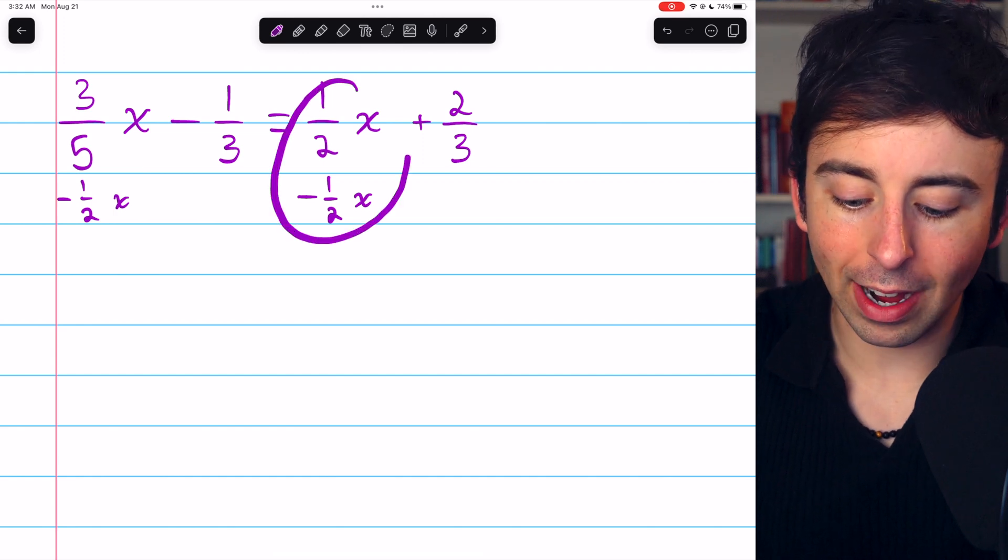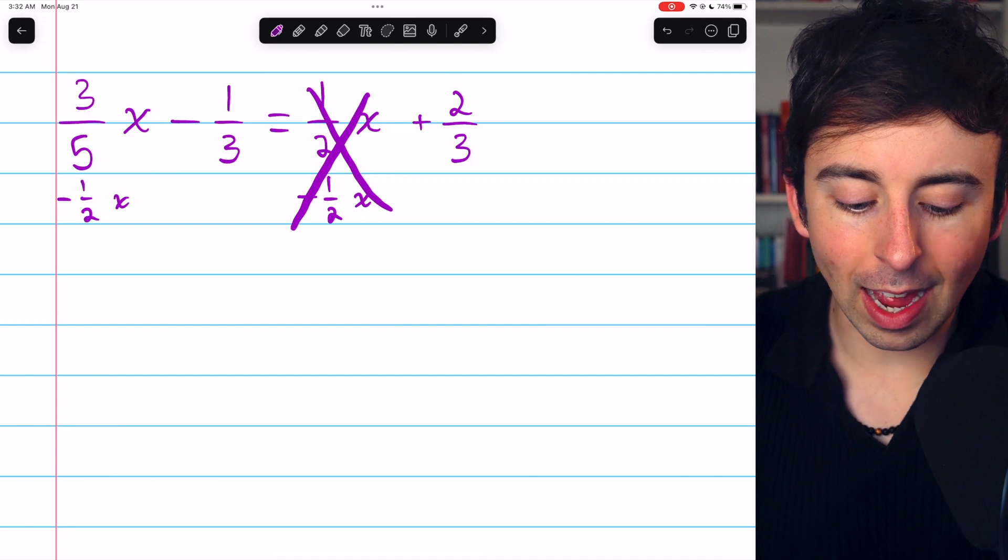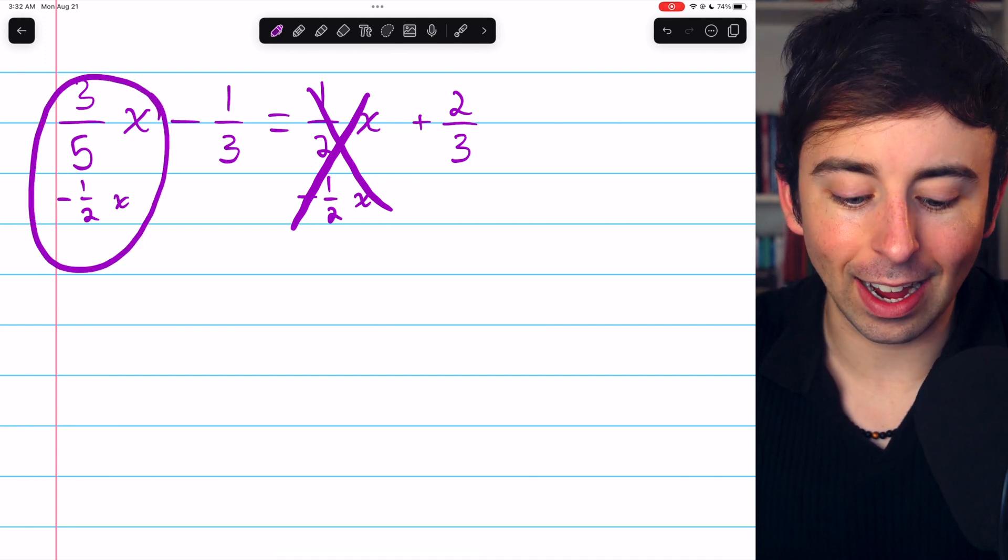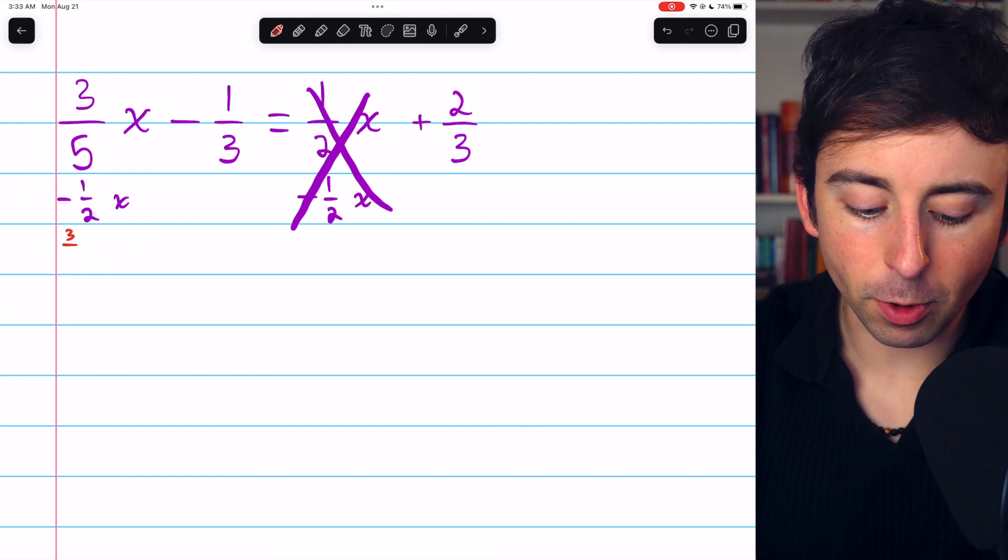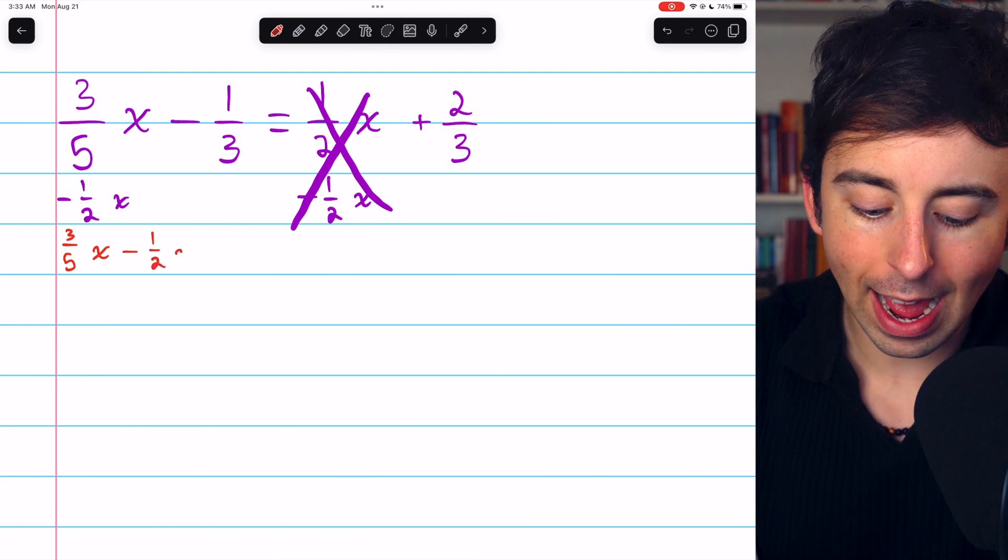Now on the right, the 1/2x minus 1/2x will just cancel out. On the left, we have to do the subtraction of 3/5x minus 1/2x. I'll write this separately in red: 3/5x minus 1/2x.